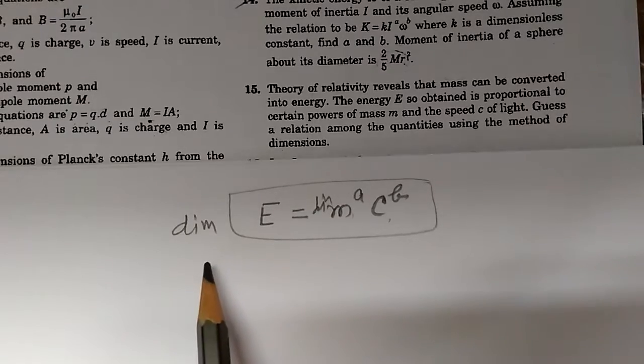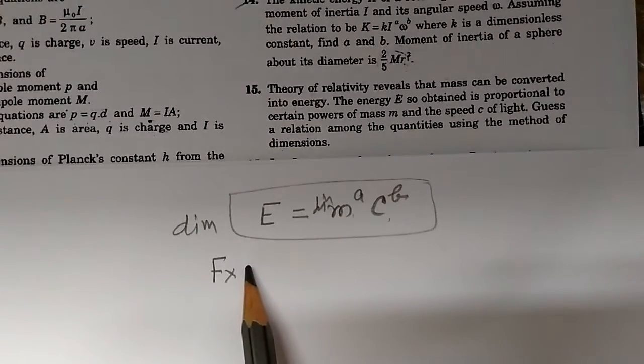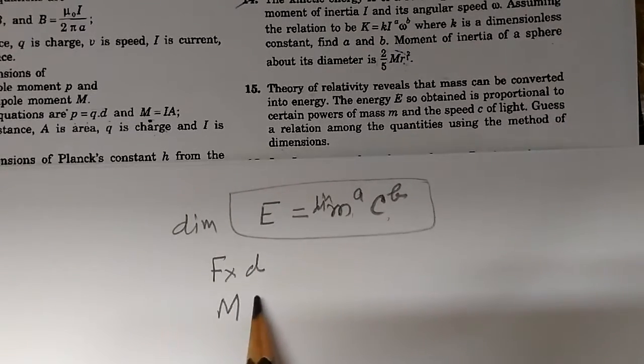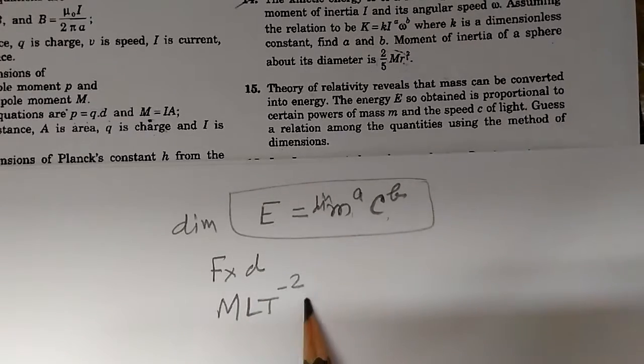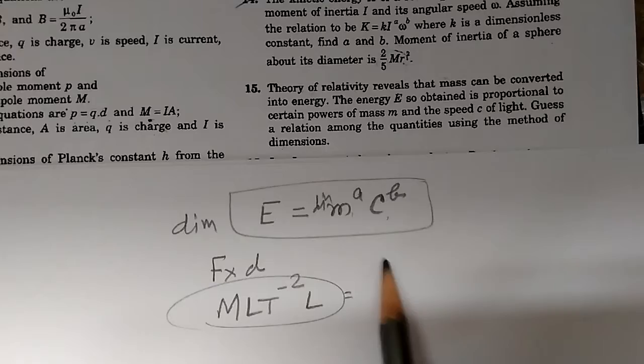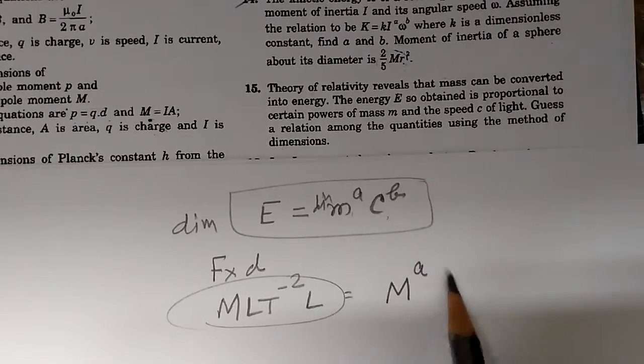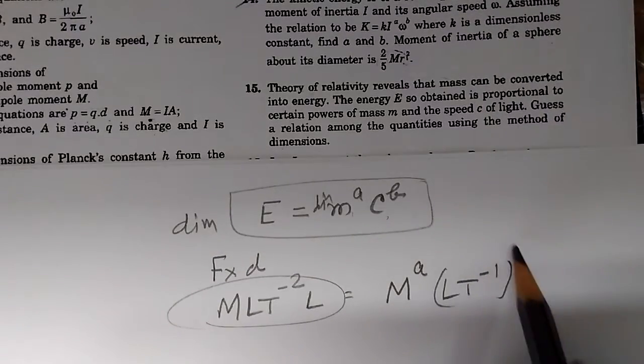Energy is work done. Work done is force times distance, and force is mass times acceleration. So M L T^(-2), and D has dimensions of L. The dimension of this equals dimension of mass M to the power A, and C is velocity. Velocity is L T^(-1) to the power of B.